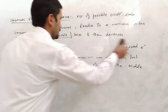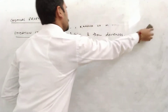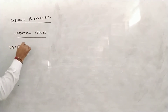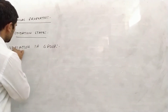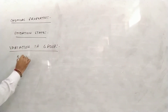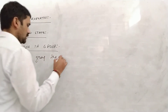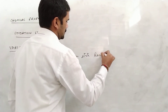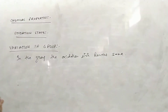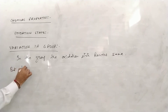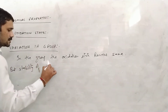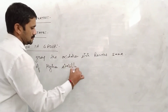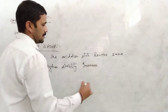Now let us discuss variation in the group. In the group, the oxidation states shown remain the same. However, the stability of the higher oxidation state increases down the group.